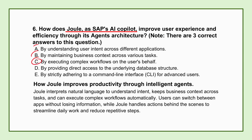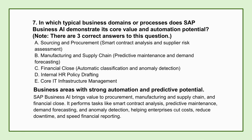That ability to automate high-value processes is where serious financial value starts to stack up. Three domains are demonstrating massive automation potential already. In sourcing and procurement, the big gains come from smart contract analysis — the AI rapidly parsing complex legal documents — and accelerated supplier risk assessment. The AI can flag potential discrepancies or non-standard clauses and assess supplier reliability almost in real time by pulling data from various sources, meaning purchasing decisions get made faster with significantly lower risk exposure.